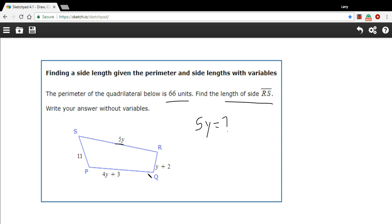And we can solve for y with this information that the perimeter is 66. Perimeter is when you add all the sides up together, the distance around the outside of a shape. So I can write an equation where I add all of these expressions on these sides together and set it equal to 66.